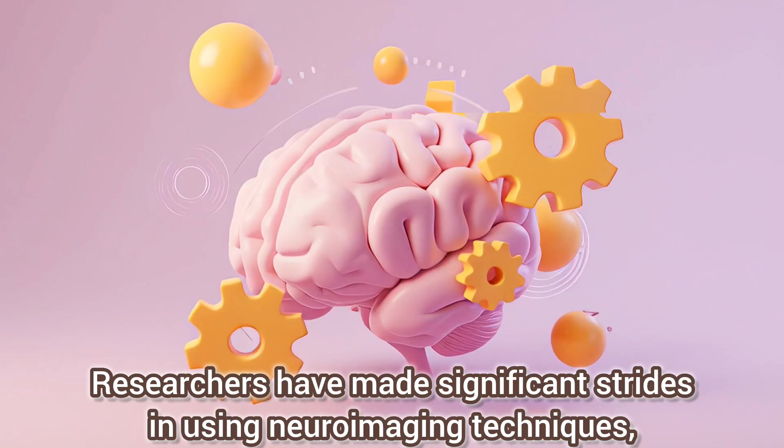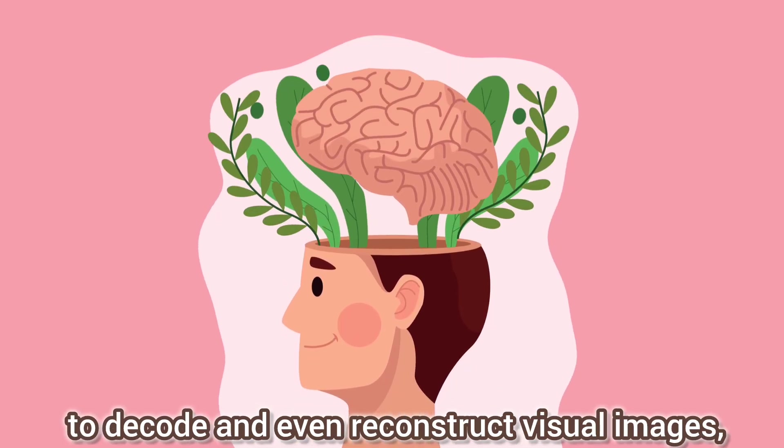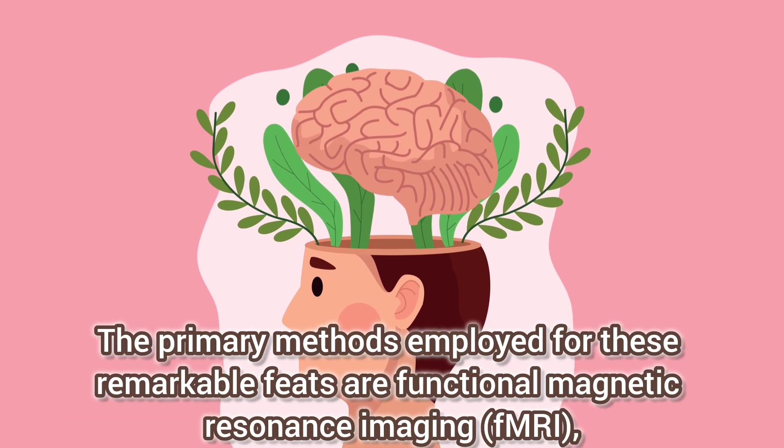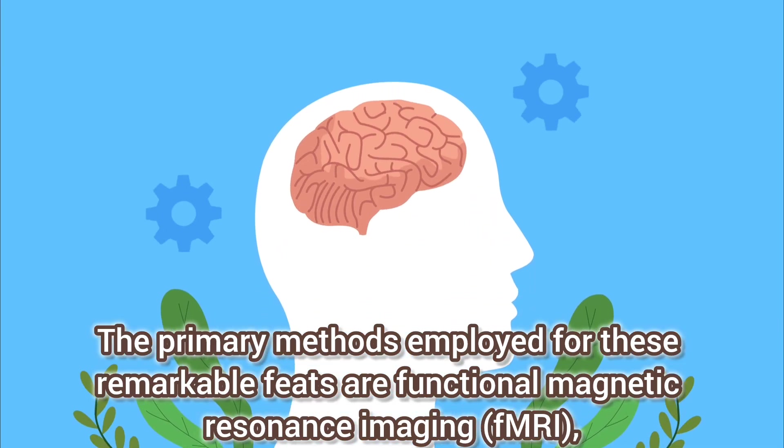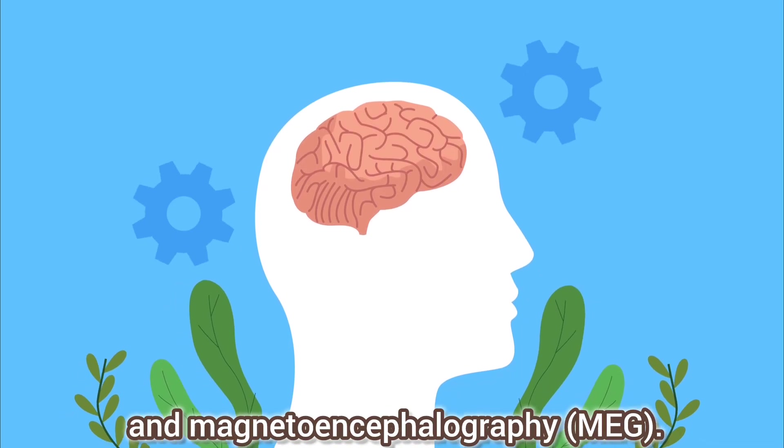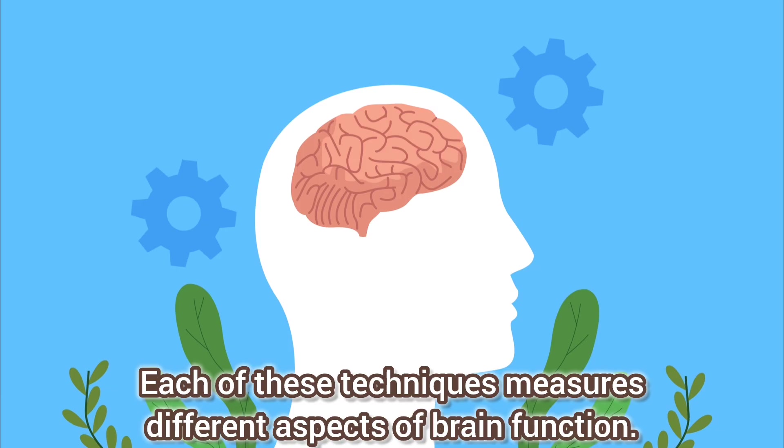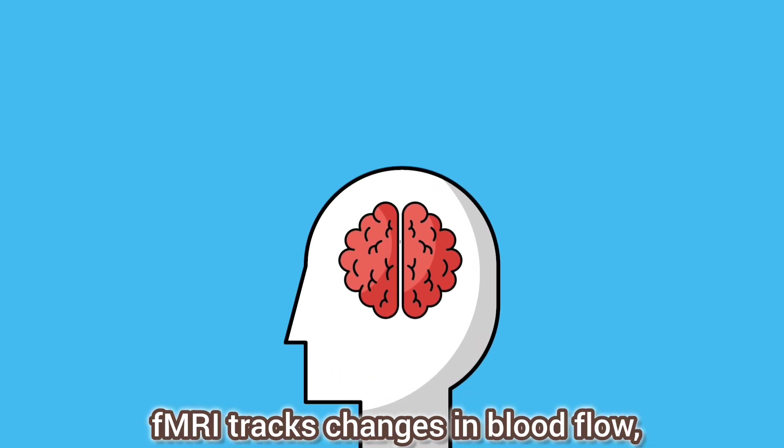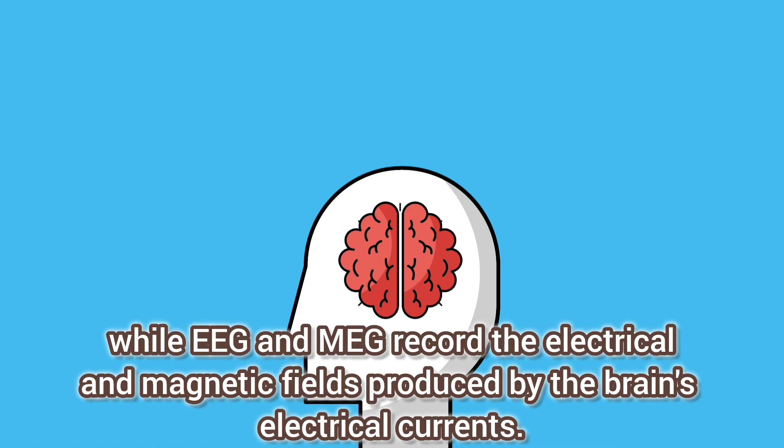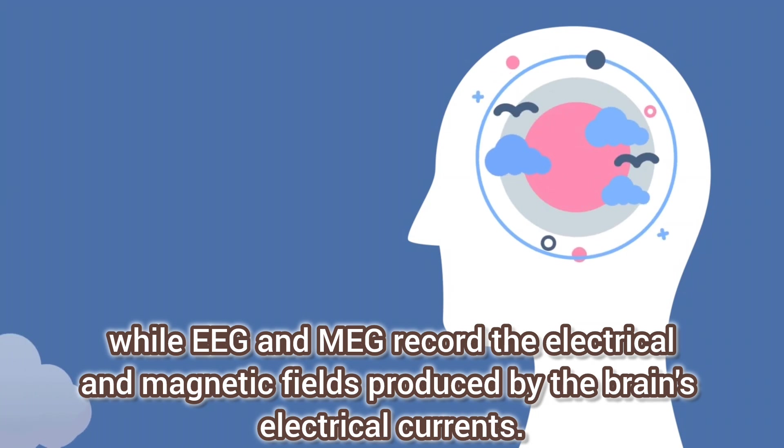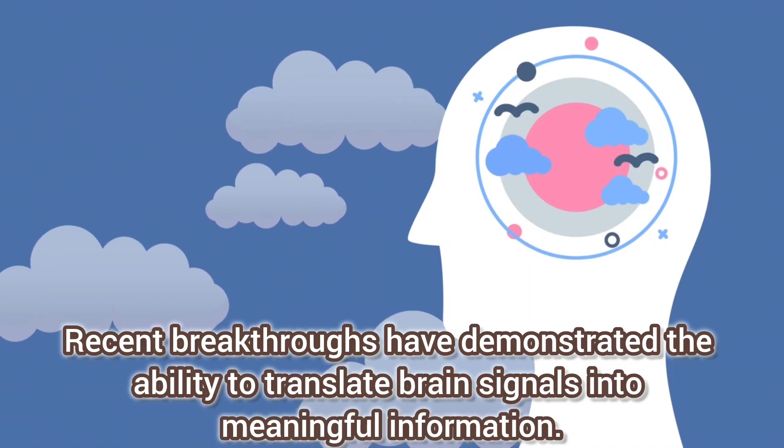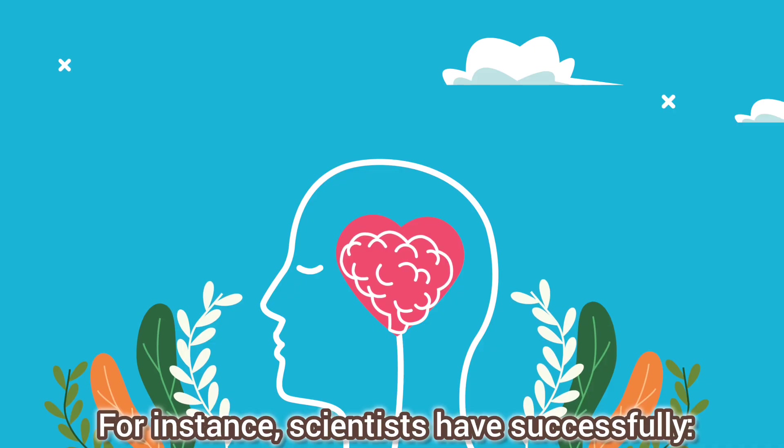Researchers have made significant strides in using neuroimaging techniques coupled with artificial intelligence to decode and even reconstruct visual images, spoken words, and inner monologue from brain activity. The primary methods employed are functional magnetic resonance imaging (fMRI), electroencephalography (EEG), and magnetoencephalography (MEG). Each technique measures different aspects of brain function. fMRI tracks changes in blood flow which indicate neural activity, while EEG and MEG record the electrical and magnetic fields produced by the brain's electrical currents.